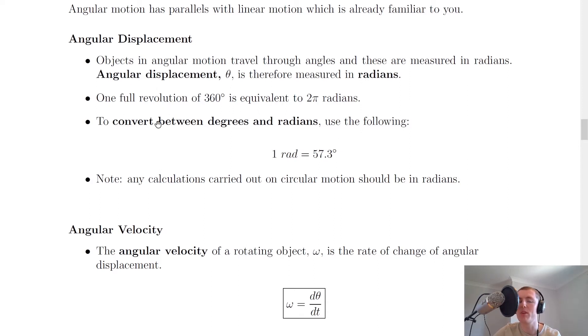We say that an object moving through one full revolution of 360 degrees is equivalent to moving 2π radians. So it's very useful to remember that 360 degrees equals 2π radians, or you could remember that 180 degrees equals π radians. Or to convert between degrees and radians you could use the fact that 1 radian equals 57.3 degrees, found using this equivalence here.